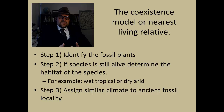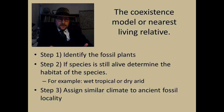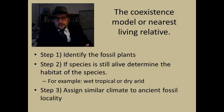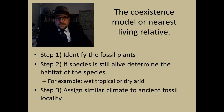The first step is to identify the fossil plants found in the fossil record. Second, if the species is living, we can look at the habitat of the living plant — for example, does it live in wet tropical environments, or does it live in dry arid environments today? Next we can assign a similar climate to the ancient fossil locality.